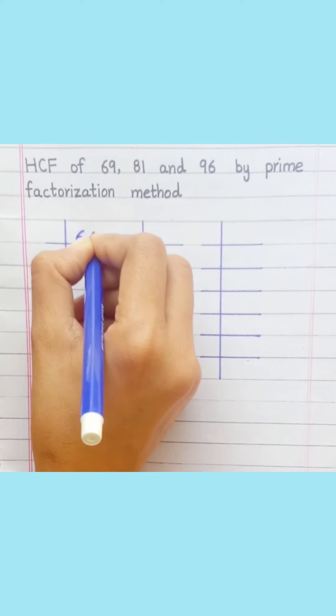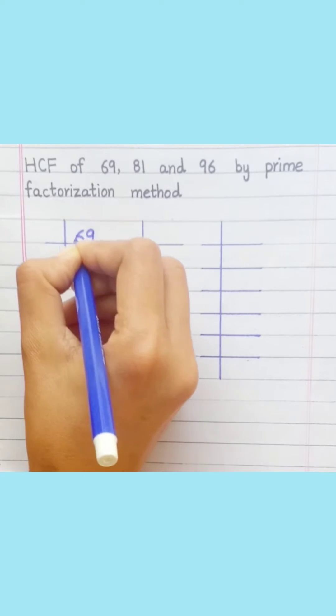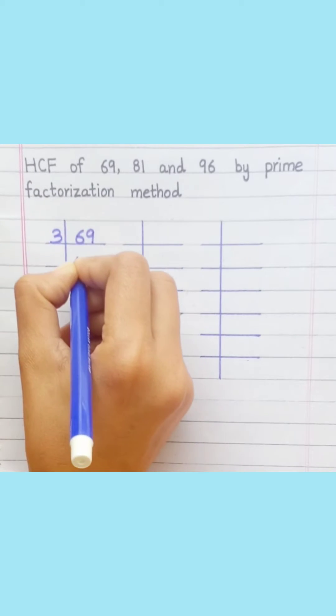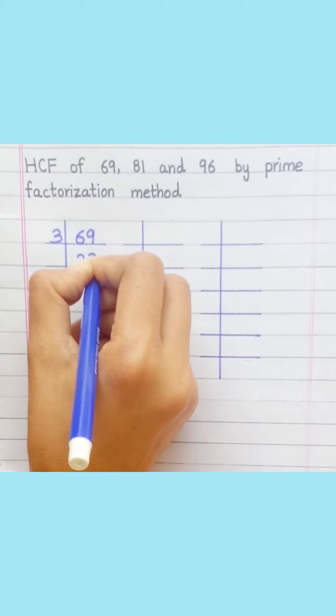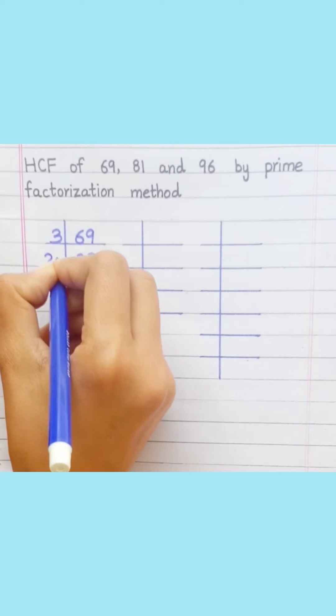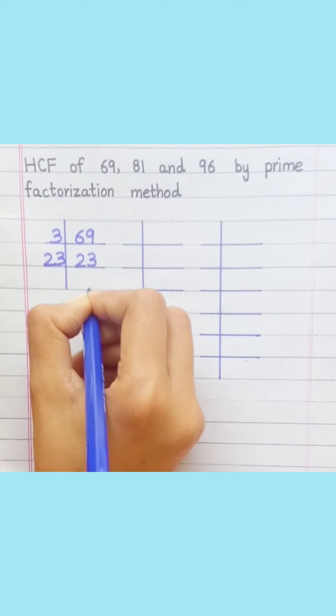69: 3 twos are 6, 3 threes are 9, 23 ones are 23. So 69 equals 3 multiplied by 23.